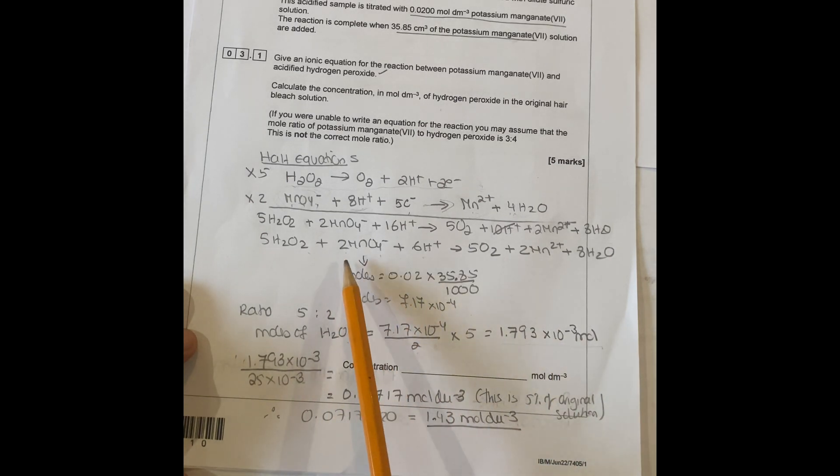You calculate the moles of MnO4- which is 0.02 times 35.85, so concentration times volume divided by thousand gives you moles of MnO4-. Then you do the ratio which is two to five.